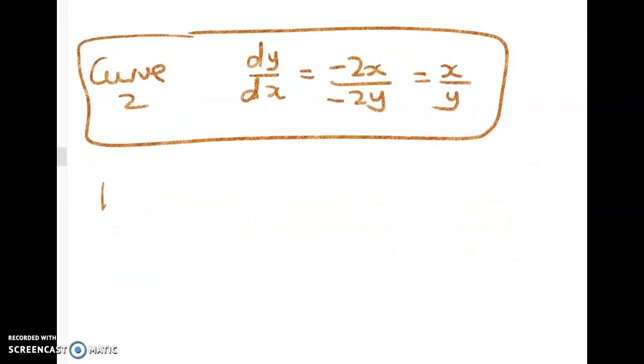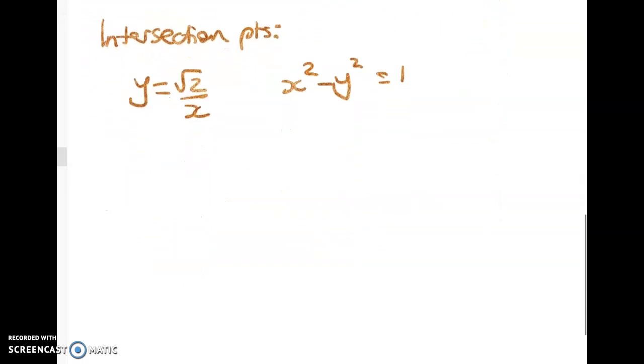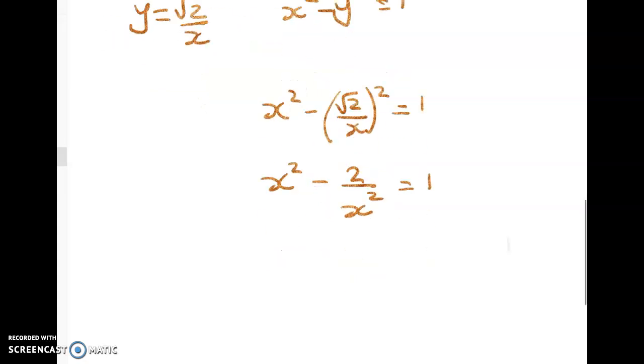So the next thing to do is the intersection points. Well we've got y equals root 2 over x and we've got x squared minus y squared equals 1. So we can substitute in and we get x squared minus root 2 on x squared is equal to 1. x squared minus 2 on x squared equals 1.